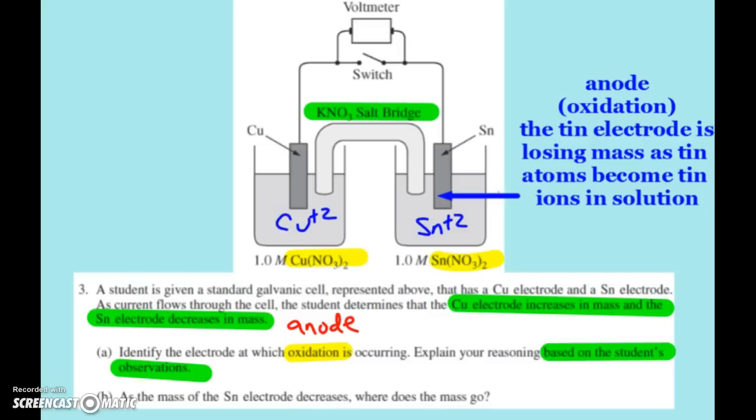So again, the anode is losing mass because tin atoms, I'm sorry, tin ions are going into solution. Tin atoms are turning into tin ions. Over on the other side, the copper electrode is gaining because the ions are leaving solution and plating onto the copper electrode. And so on the left hand side, we are losing positive ions. So that's why the positive potassium ions are going to go over there. And on the right hand side, we're gaining positive tin ions. So the nitrate ions are going to go over there.